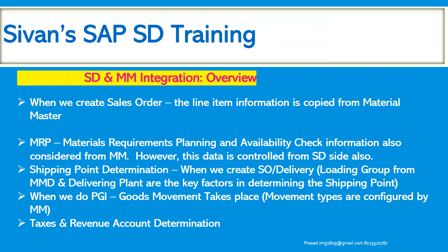When we do the PGI, the goods movement takes place. Everyone knows about it and all the movement types are configured by MM consultants normally. The taxes determination and revenue account determination happen when we create a sales order because of the backend settings done by the SD consultants.